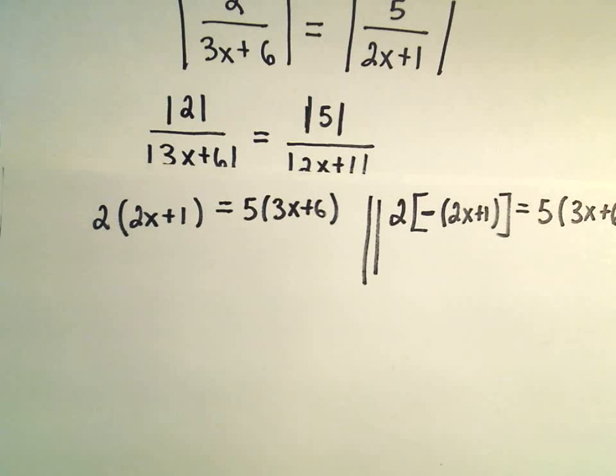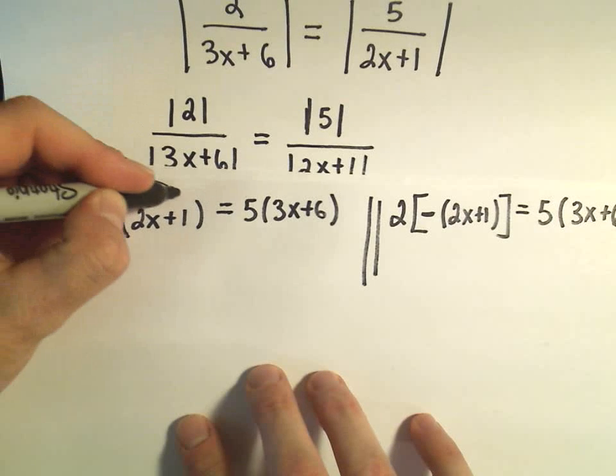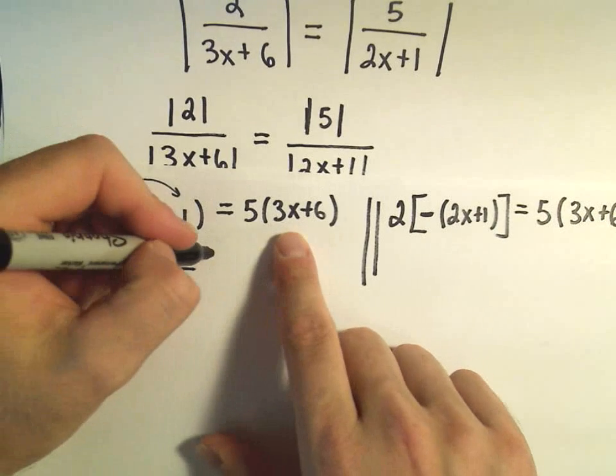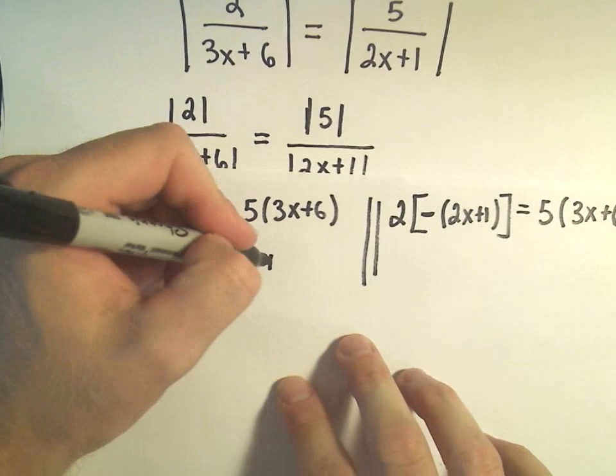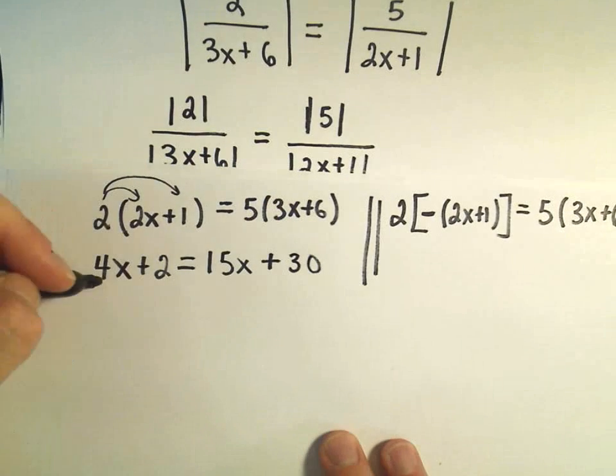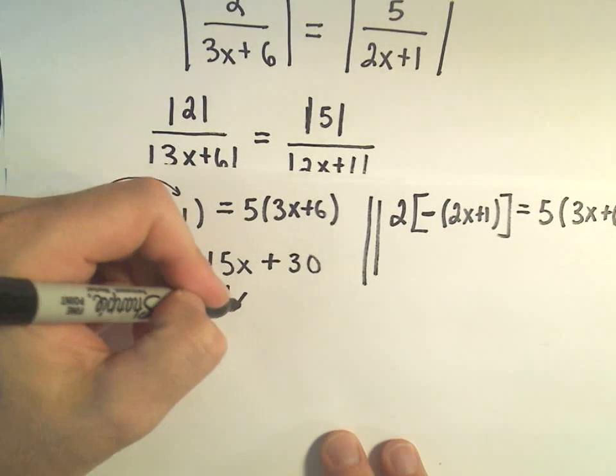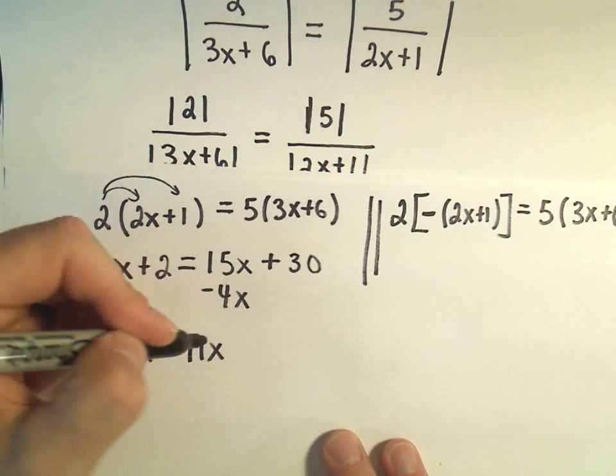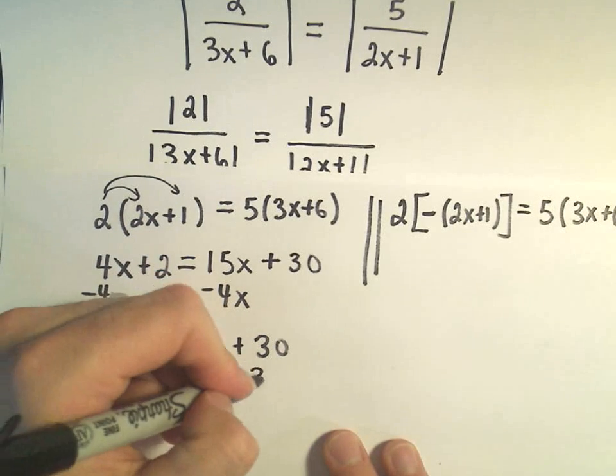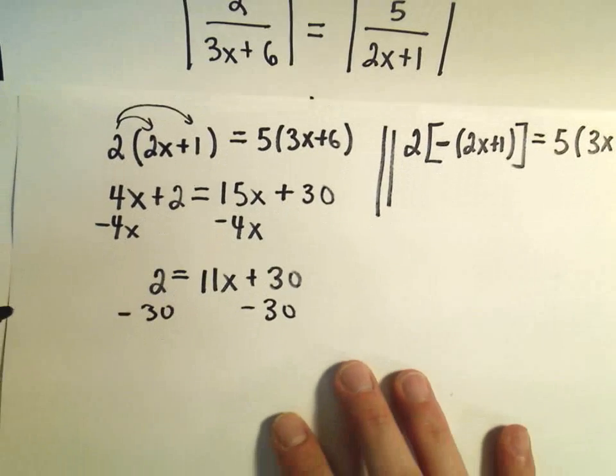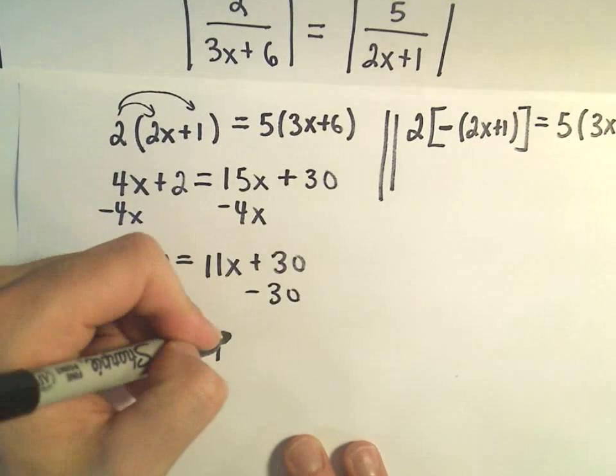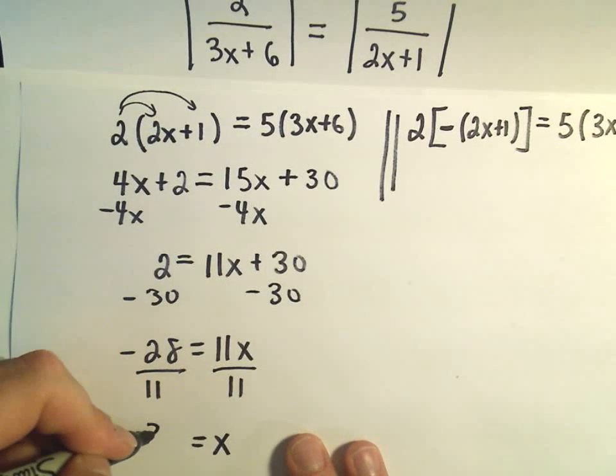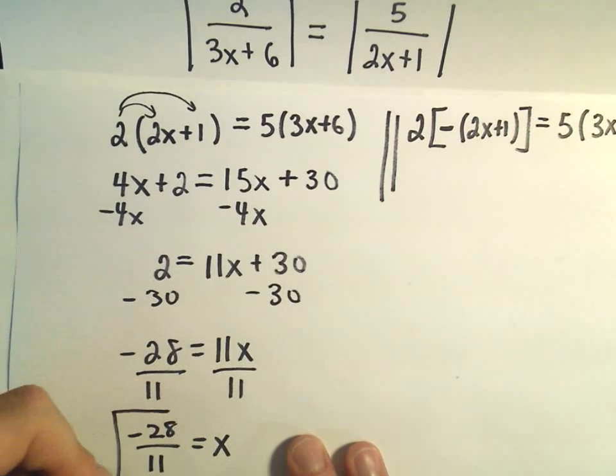Well at this point now I've got my equations I have to solve. So on the left one, if I distribute by 2, I'll get 4x plus 2. I'll have 5 times 3x, which is 15x. 5 times 6 is going to give us positive 30. And then I'll subtract 4x from both sides. So that'll give me 2 equals 11x plus 30. And now if I subtract 30 from both sides, I'll get negative 28 equals 11x. And then I can divide both sides by 11. And I'll get x equals negative 28 over 11 as one of my solutions.